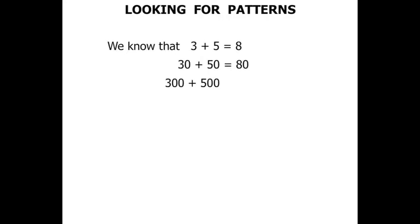300 plus 500 equals 800. Again, there's a pattern. We're dealing with hundreds. We've got 3 and we've added the 5 to get 8, and then we put the two zeros on the end to make it 800.